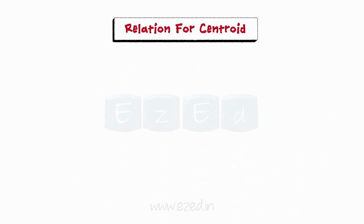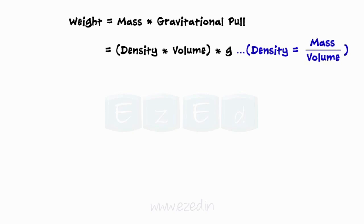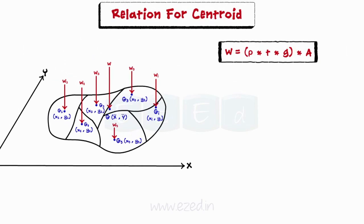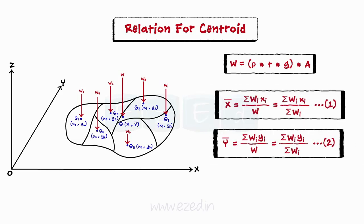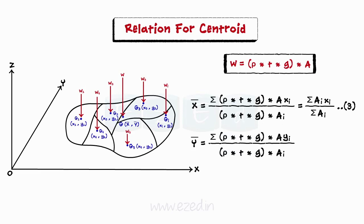Let us now learn the relation to find the centroid. We have previously learned that weight equals mass into gravitational pull. Mass of an object is equal to the product of its density and its volume. Thus, the weight of a body is equal to the product of its density, cross-sectional area, its thickness, and the gravitational pull. For uniform bodies — that is, of same density and thickness throughout — we can substitute the value of weight in equations 1 and 2. Thus, we can derive a relation for x-bar, the x-coordinate of the centroid, in terms of the individual areas of the parts and their respective x-coordinates. Similarly, we derive the relation for the y-coordinate of the centroid y-bar. Relations 3 and 4 are used to locate the centroid G of a plane area having coordinates x-bar, y-bar.